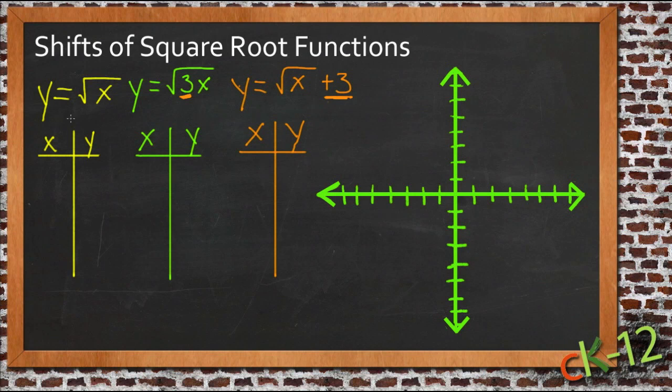So let's take a look first at just the parent function. If we pick some values for x, 9, 4, 1, 0, kind of my standard perfect squares there, then y of course would be the square roots of those, 3, 2, 1, and 0.